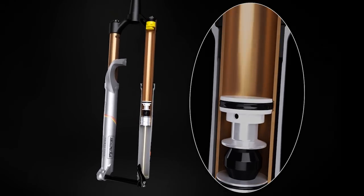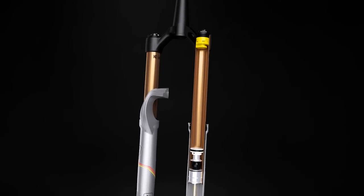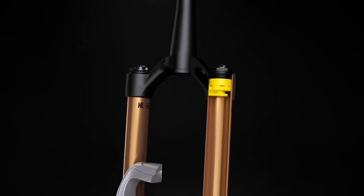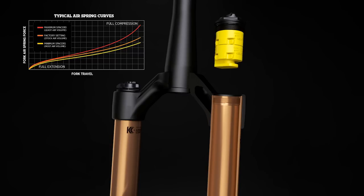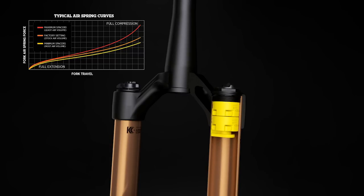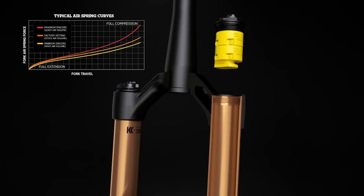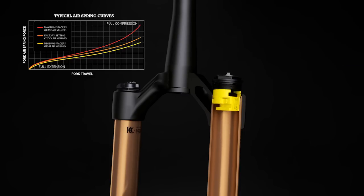Riders can fine tune the characteristics of the positive air spring using volume spacers. Adding volume spacers increases the progression of the air spring, providing more mid-stroke support and bottom-out resistance. Removing volume spacers will create a more linear air spring, providing a more sensitive mid-stroke and making it easier to achieve full travel.